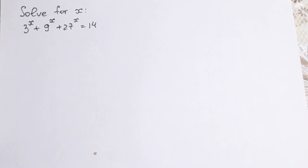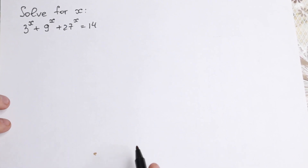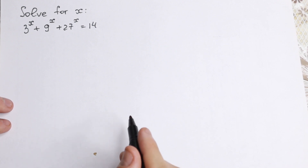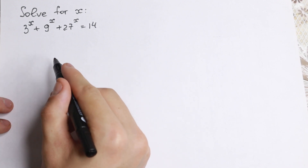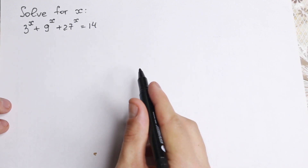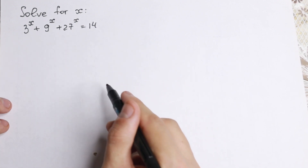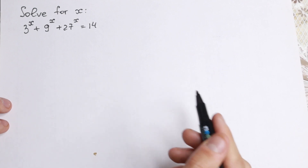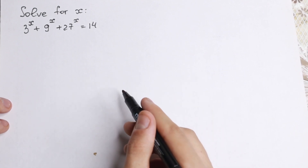Hello everyone! Happy to see you here. Really interesting math problem today. We have an exponential equation: 3 to the x plus 9 to the x plus 27 to the x equals 14, and we need to find x.